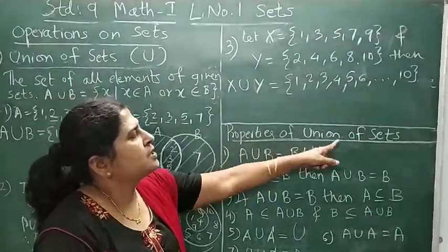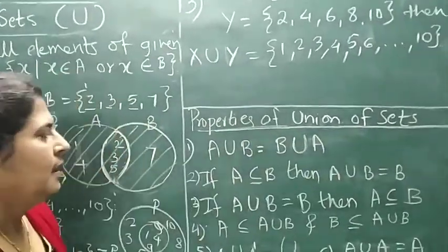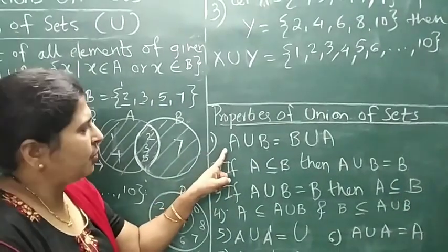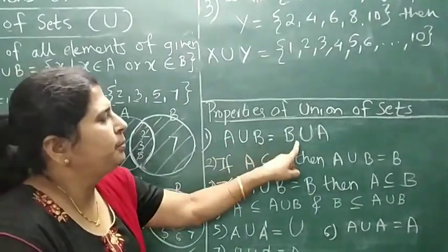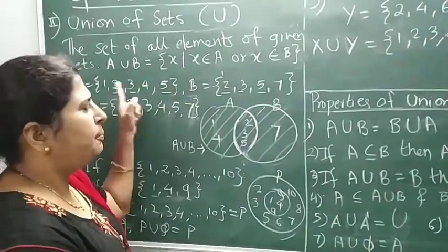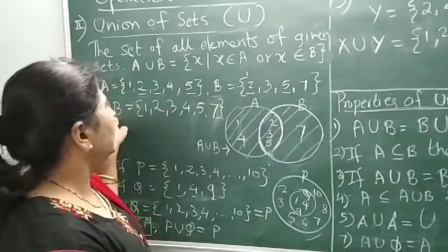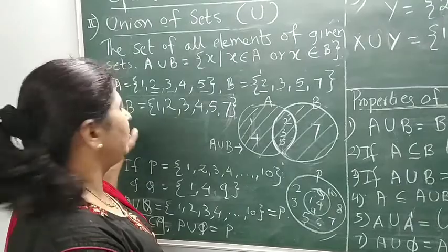Now let's see the properties of union of sets. First property: A union B equals B union A. For any two given sets A and B, A union B is going to be same as B union A.